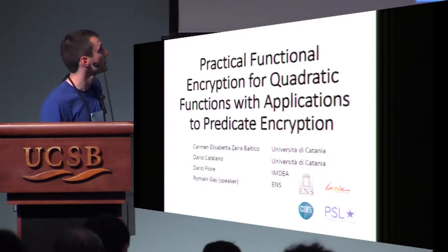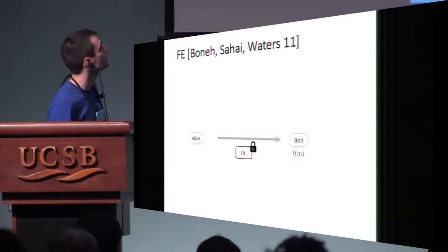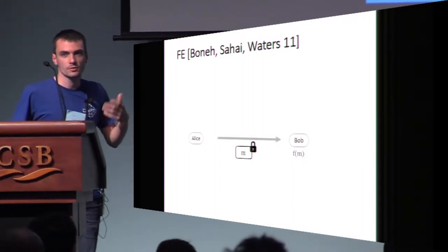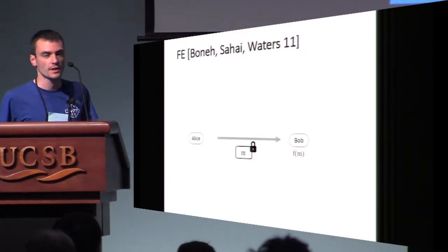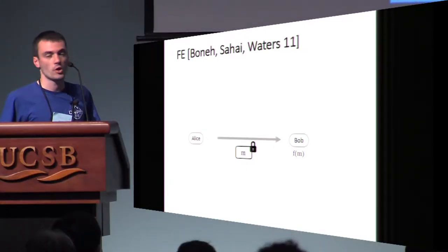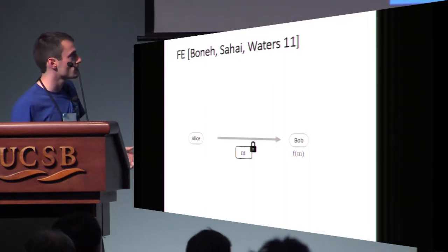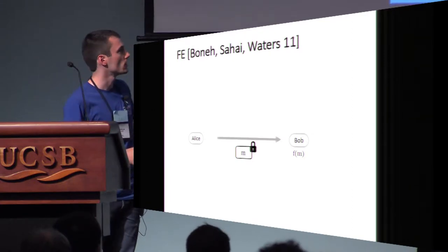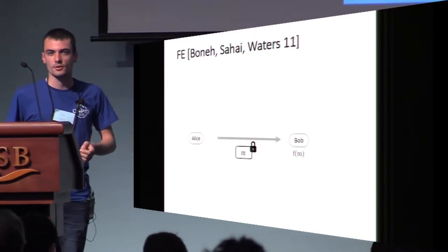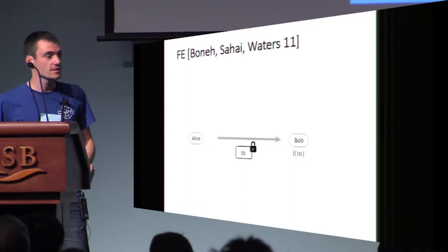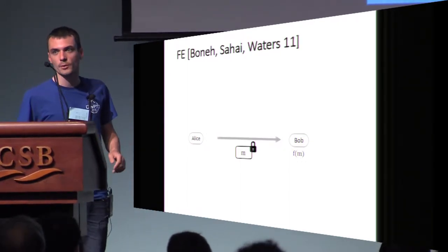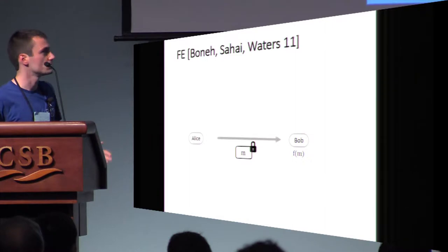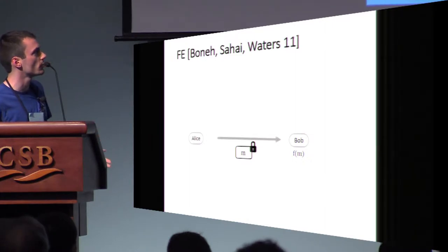Let me define functional encryption, or FE. Suppose Alice wants to send some data M to the cloud Bob to delegate storage and computation on this data, but she still wants some privacy. So she's going to encrypt it in such a way that Bob only learns some particular function f on M, and nothing more. You can think of f as a function that computes descriptive statistics on the encrypted data, or some SQL query. Because Bob only learns this particular f of M, we have some notion of privacy — Bob doesn't learn the entire message M.